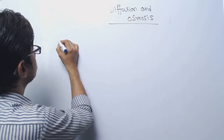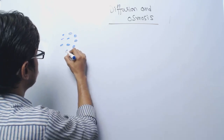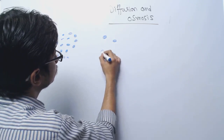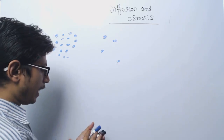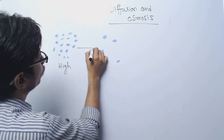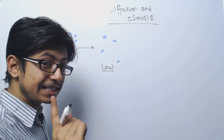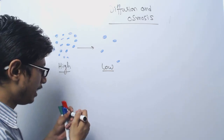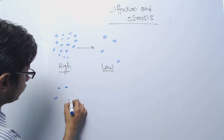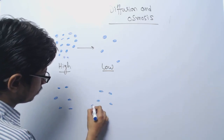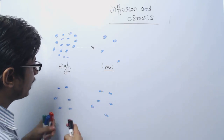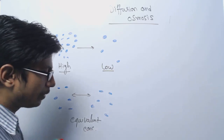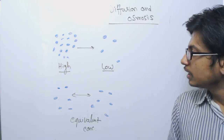If I draw the situation: this is the solute — let's say these are the ink particles — present in very high concentration here, and here it is moving. The particles from the high concentration will move to the low concentration of the same particle, until they reach an equivalent concentration. After some time you will see this equilibrium state. They will reach equilibrium for the diffusion. That is the idea of diffusion.